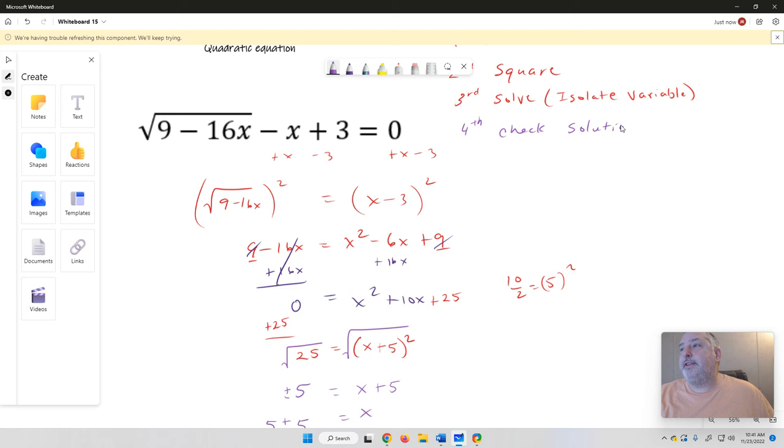Don't forget this step. So I'm going to go back to the original problem. I'm going to write it over here so I have some room. Square root of 9 minus 16x minus x plus 3. And that has to equal 0.